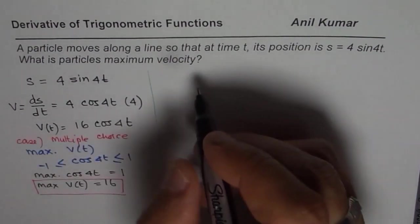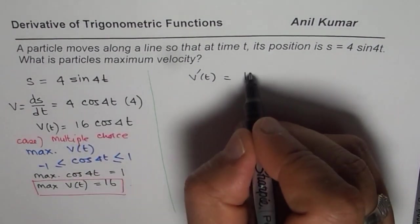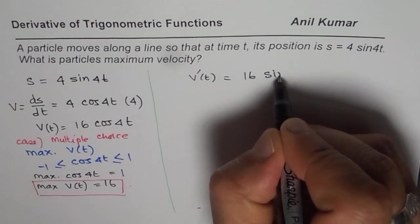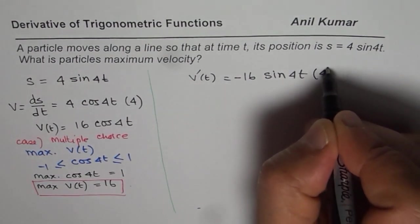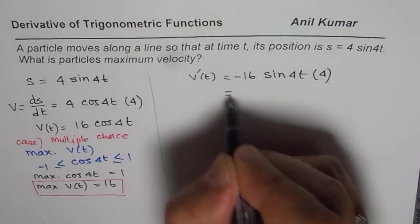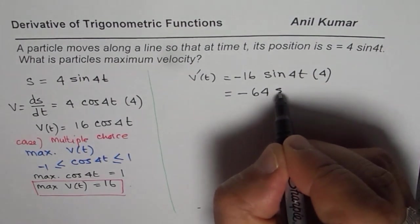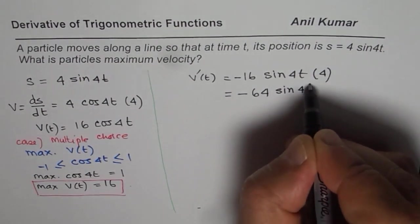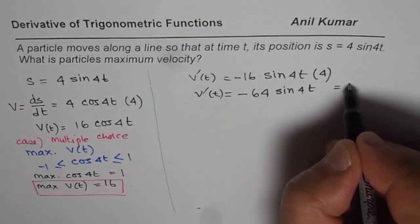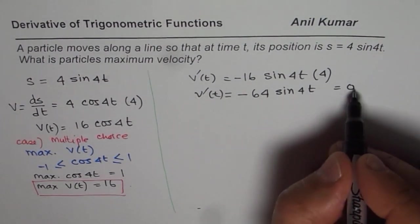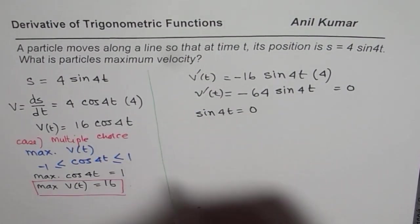So let's find derivative of velocity. Derivative of velocity will be 16 times the derivative of cos 4t which is negative sin of 4t, times 4. So this is 4 times 16 which is 64. So we get negative 64 sin 4t. Now for the critical number, this should be equal to 0. That means sin 4t should be 0.